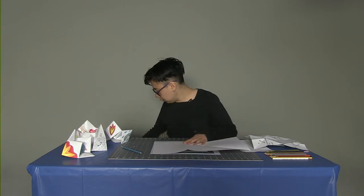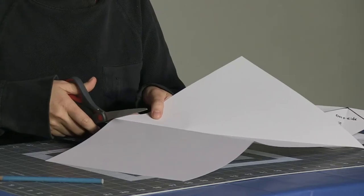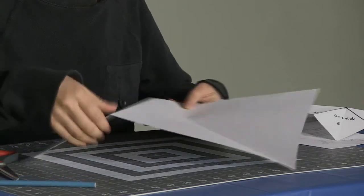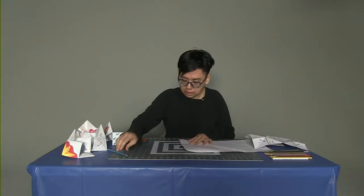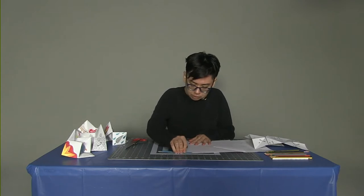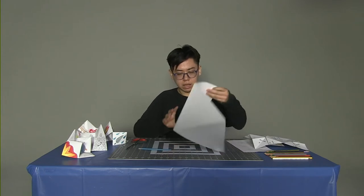So if you have scissors you can go ahead and cut right along here. If you don't have scissors that's also okay. What you can do is take this crease and fold it back and forth a couple of times so the paper has a memory of where it needs to be cut.